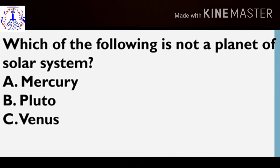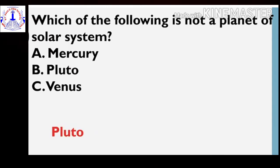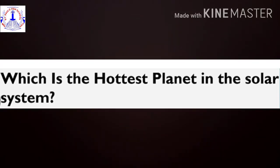Next, which of the following is not a planet of the solar system? The options are Mercury, Pluto, and Venus. Awesome! The answer is Pluto. Children, now a few questions without options.